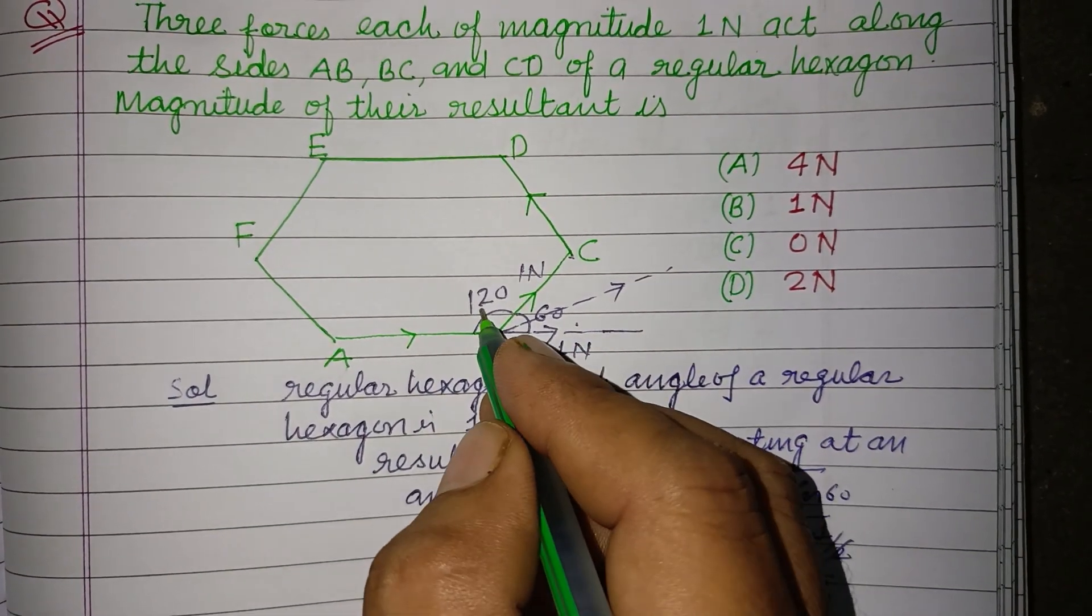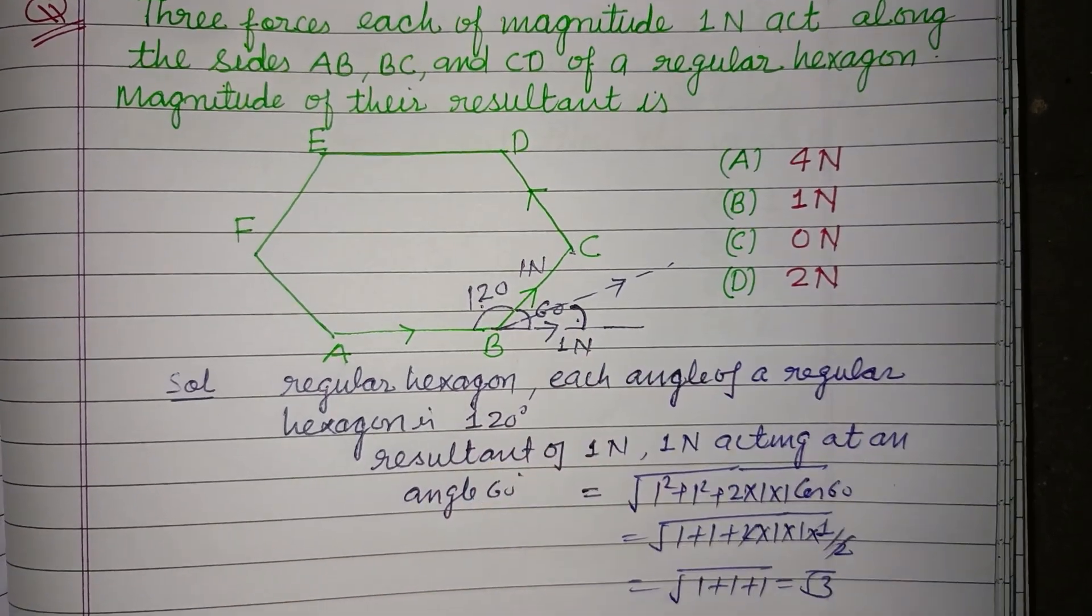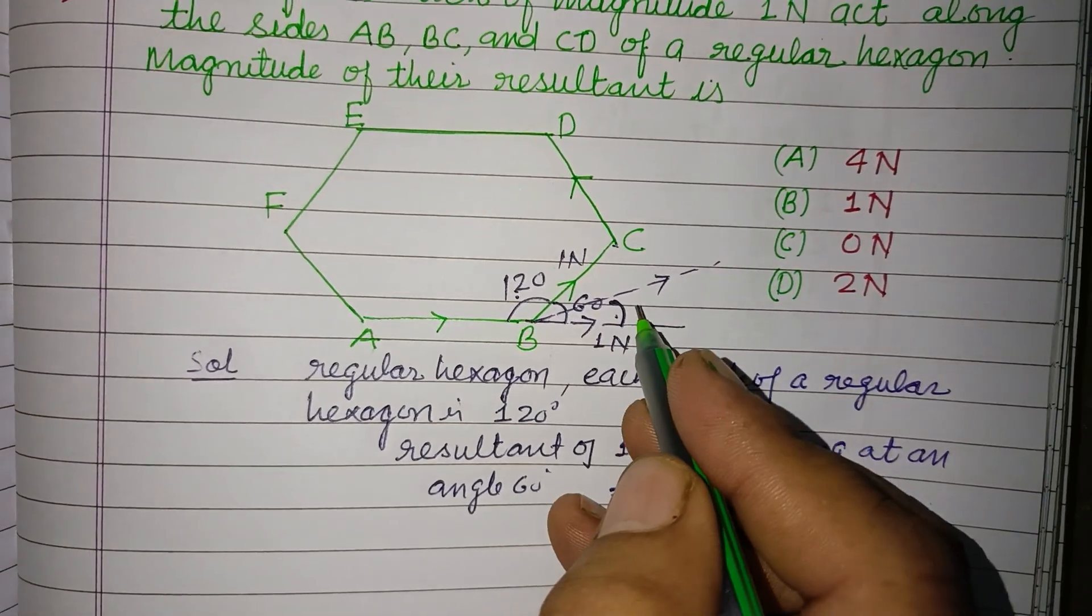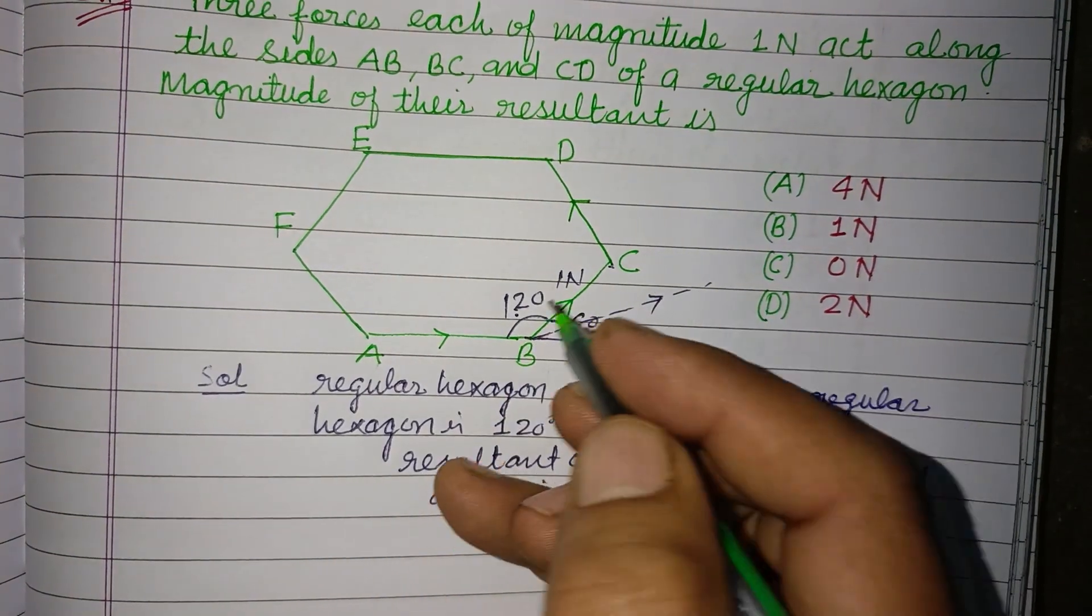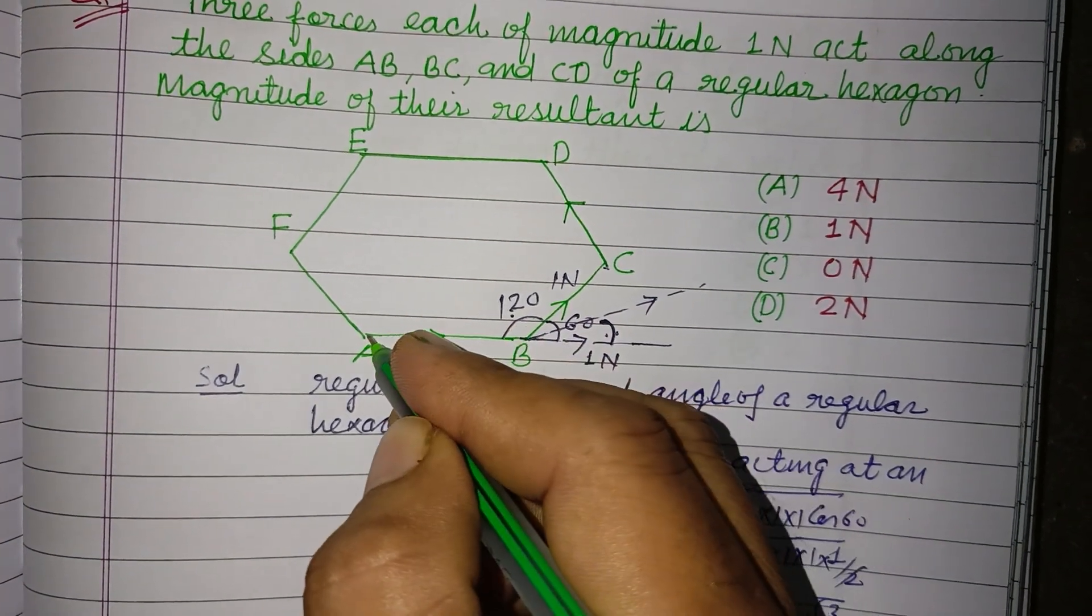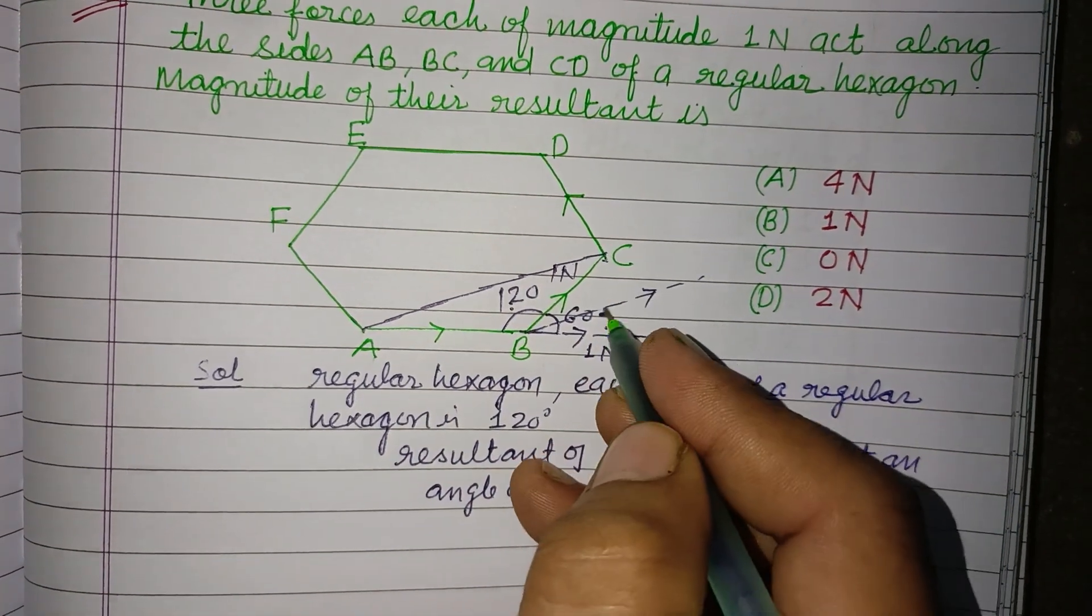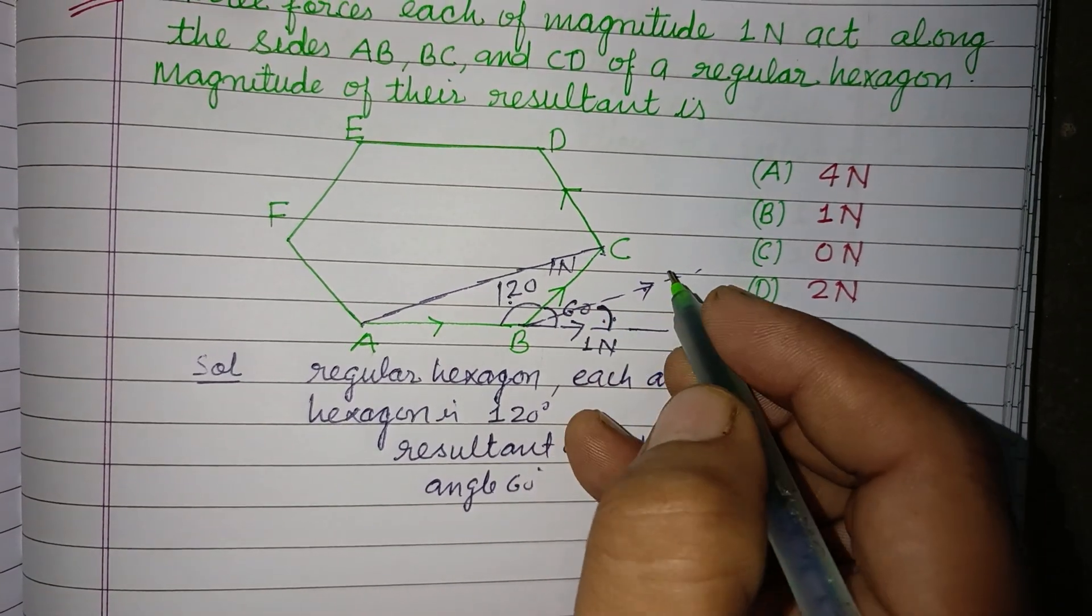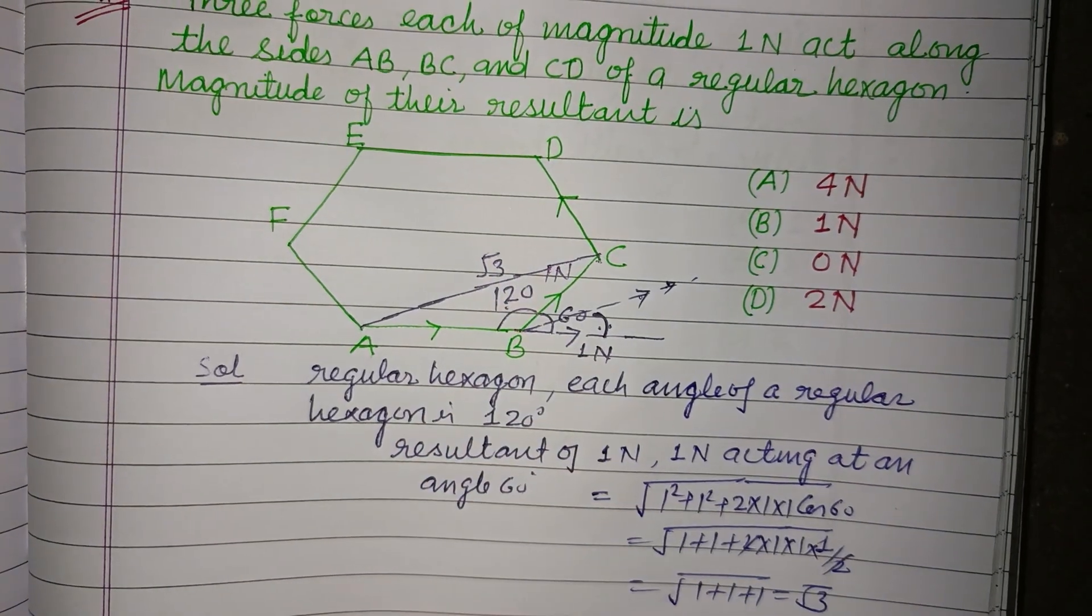You know that this is 120 and this angle will be 30. So if we add this AC, then AC and this root 3 are parallel to each other. So this will also be root 3.